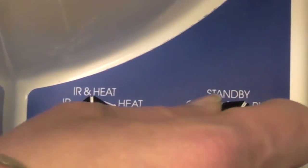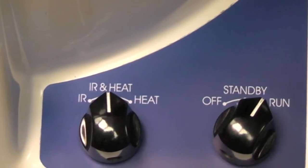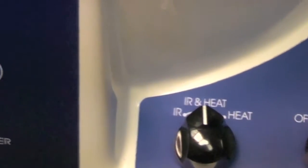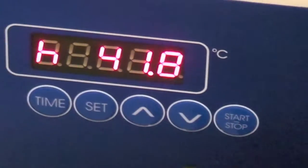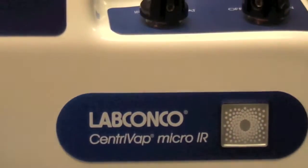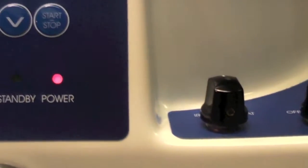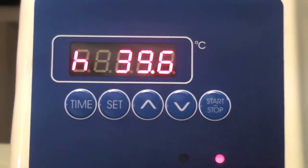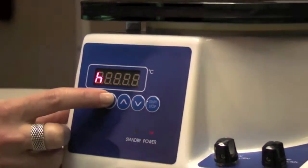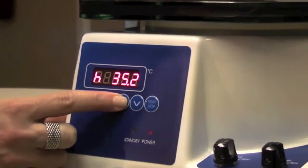The microprocessor-controlled 300-watt heater speeds evaporation by supplying a controlled amount of heat from 35 degrees Celsius to 65 degrees Celsius in 0.1 degree increments. The LCD prompts the user to set heat and time.